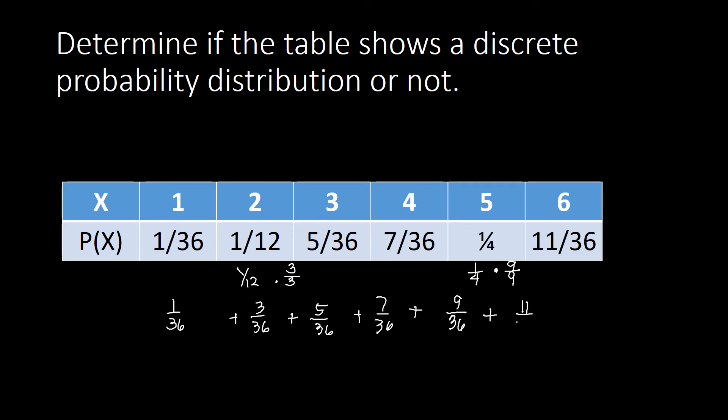Adding everything up, we have 1 plus 3 that's 4, plus 5 that's 9, plus 7 that's 16, 16 plus 9 that's 25, plus 11 that's 36. So this is now 36/36 or simply this is 1. So that means this is a probability distribution. So let me just write my shortcut on the probability distribution here as PD.